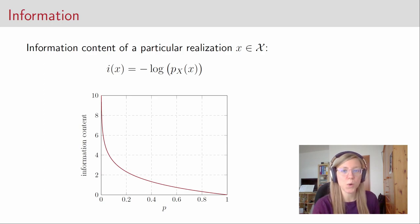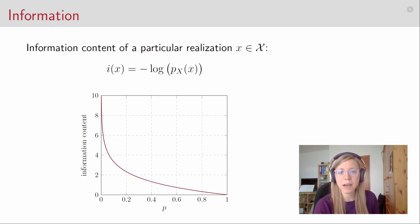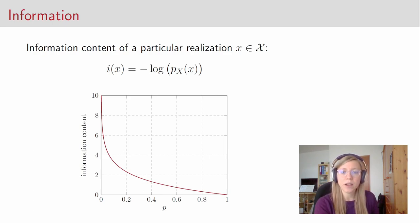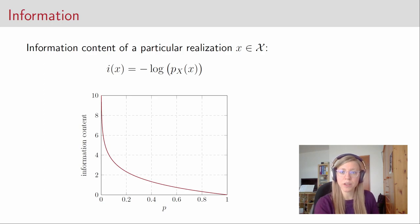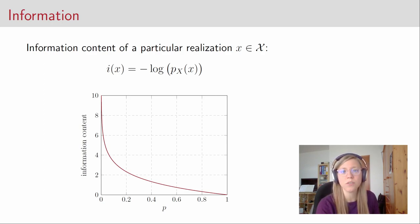Suppose that we have flipped the coin one time and got the outcome heads. So we've just learned one realization of the random variable. But how much information did we get from this one random experiment? The information content of a particular realization of the random variable is given by minus the logarithm of the probability that the realization occurs. Note that here and throughout the whole video logarithms are always taken to base two. Below you can see a plot of the information content function as a function of the probability.